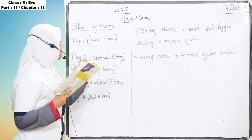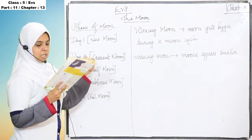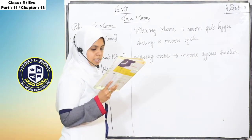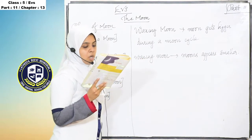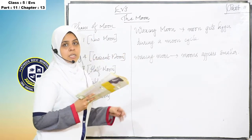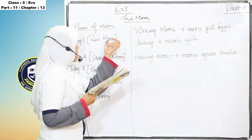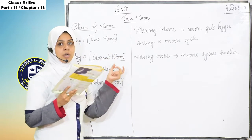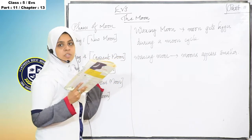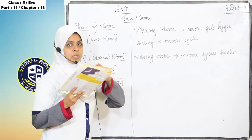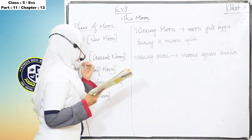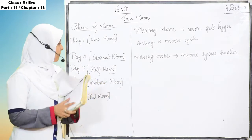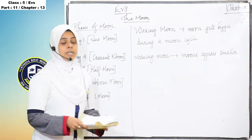Crescent moon occurs approximately on the 4th day of the moon cycle. During this phase, a quarter of the moon's illuminated surface is visible from the earth. We can see a crescent shape. Crescent moon is on day 4.